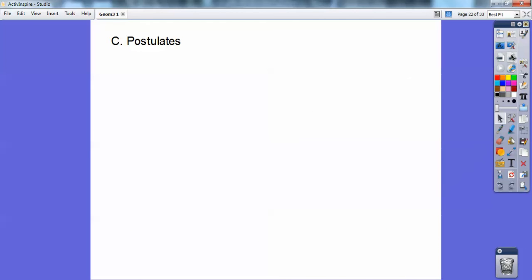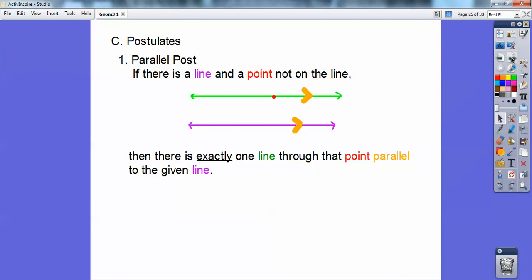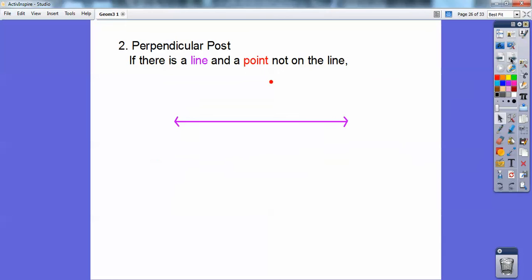So postulates. Here's some postulates. A parallel postulate says this: If there's a line and a point, notice the line is purple and the point is red, and a point not on the line, then there exists exactly one line, the green line, through that point, that red point, that's parallel. Notice I have the gold parallels to the given line. So if there's this point that's not on this line, there's only one line that goes through that that's parallel to the purple line.